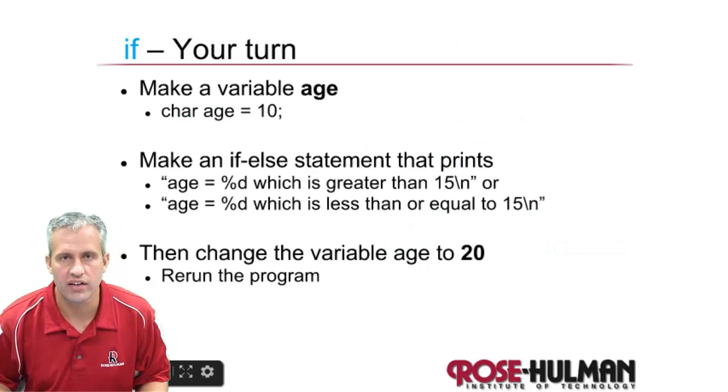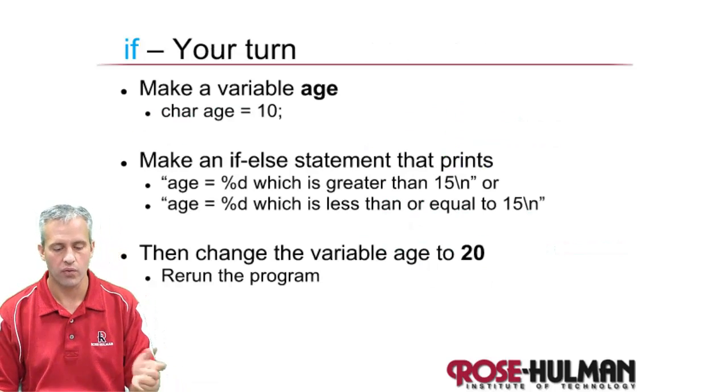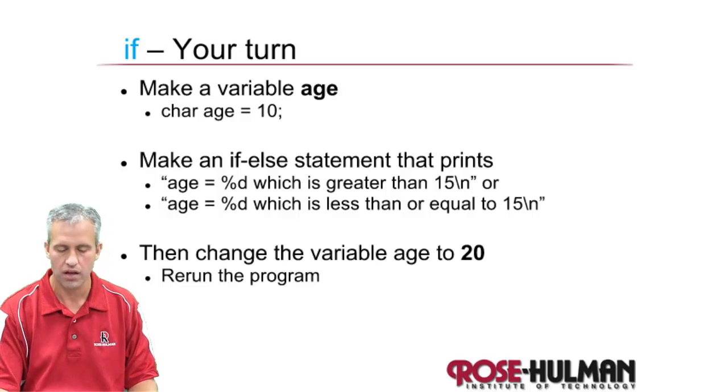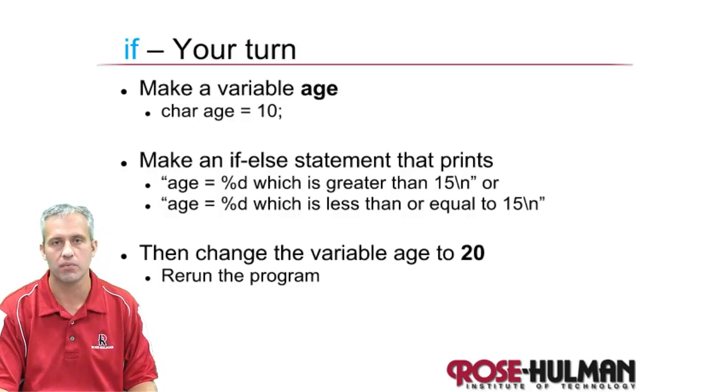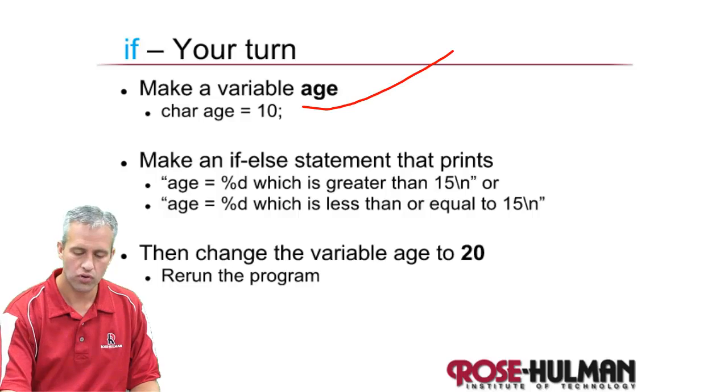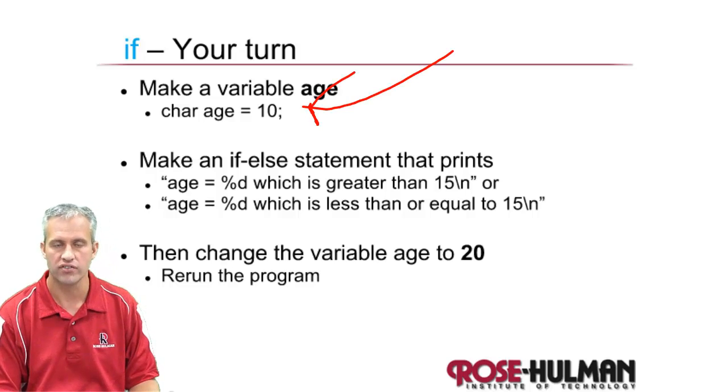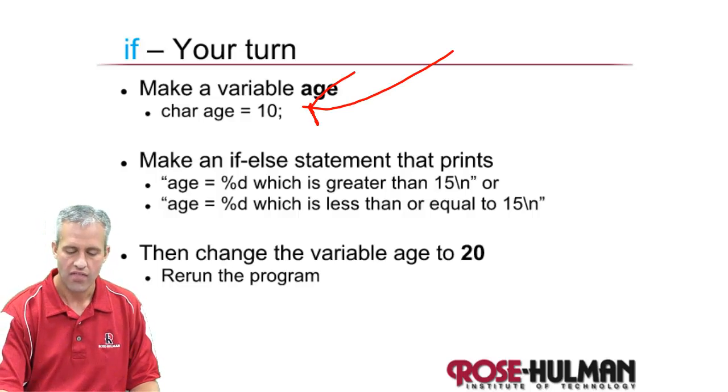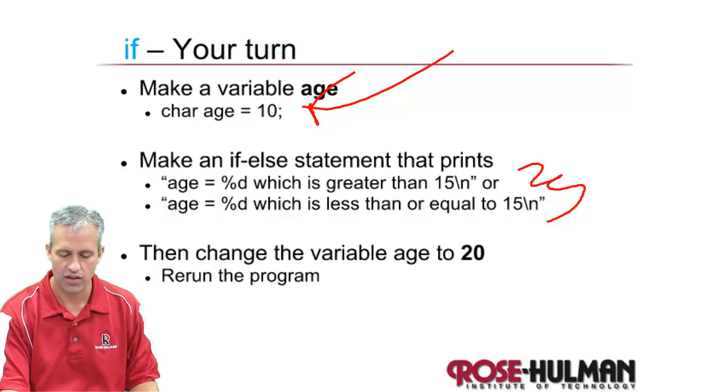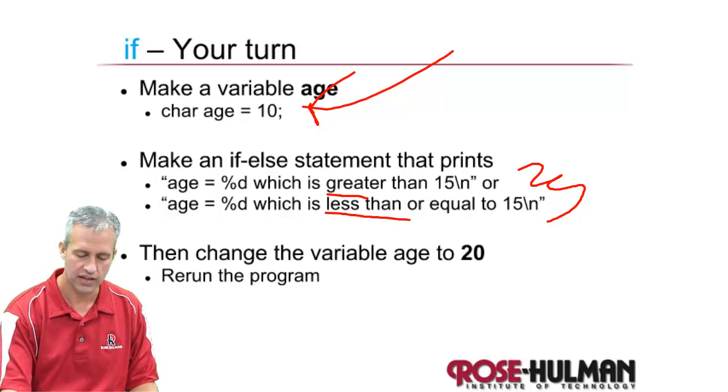So I always learn things best by doing. So what I want you to do is go into MPLAB. You've hopefully already set up the project from the last video lecture. If not, you can set up a new one. Create a variable called age, set its value to 10, and then make an else if statement that does one of two things. It either prints out that it's greater than 15, or less than 15. And I also would like you to print the value using a %d. If you can't remember how the syntax works on this, it's printf.